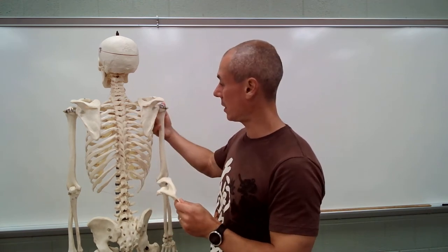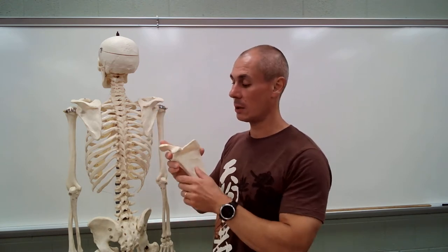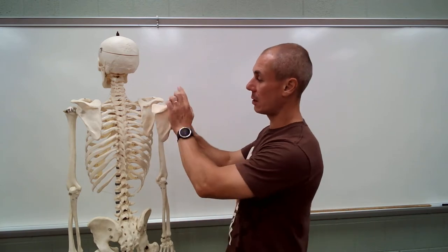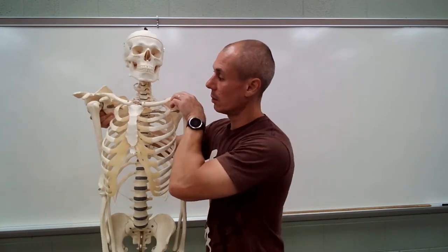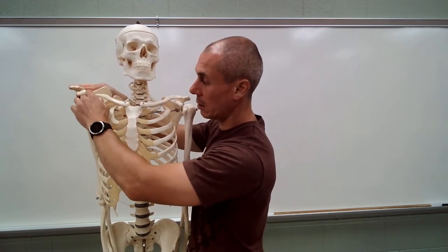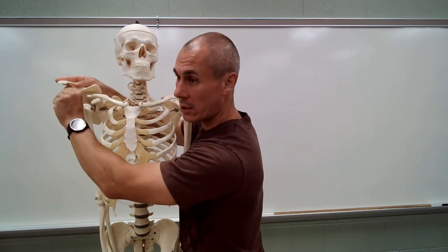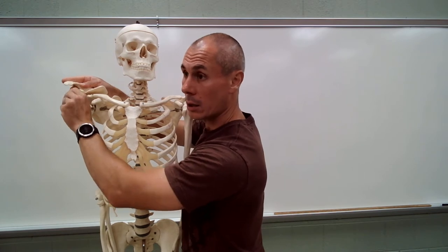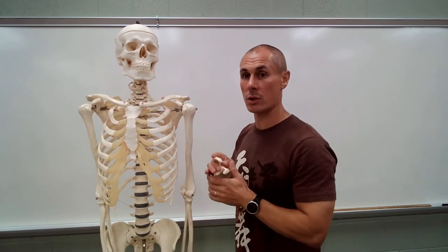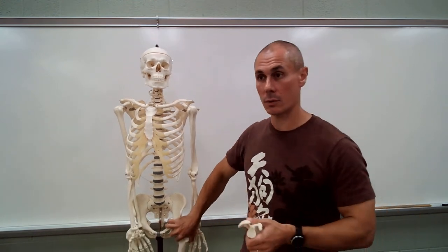The anterior surface is also called a fossa — the subscapular fossa. There's a muscle here: subscapularis. Now these two processes: the posterior process is called the acromion, and it articulates with the clavicle. The anterior process is the coracoid, and it's the site of origin for many muscles, especially in your anterior arm.